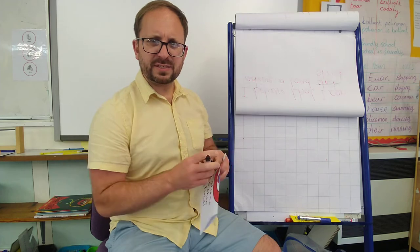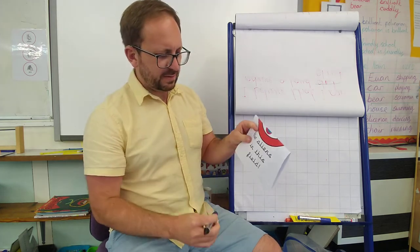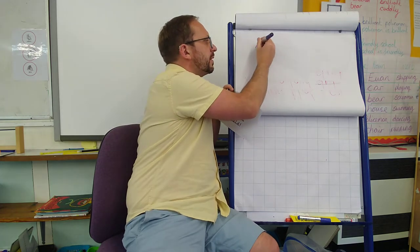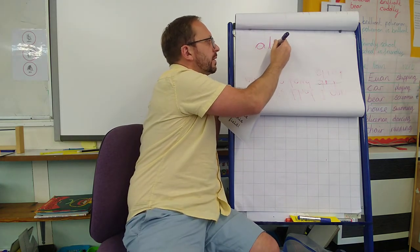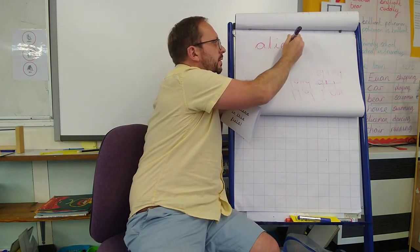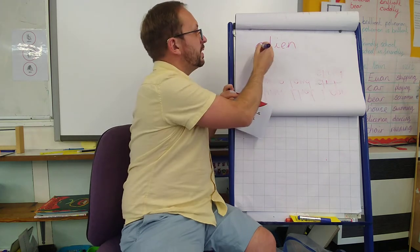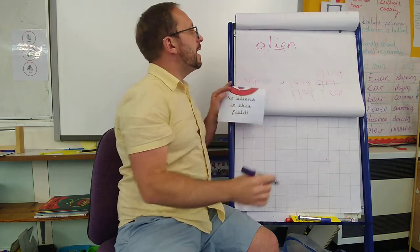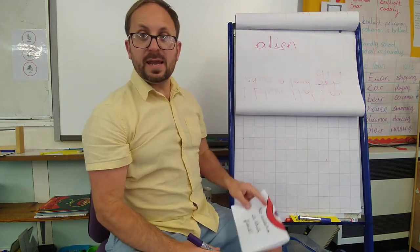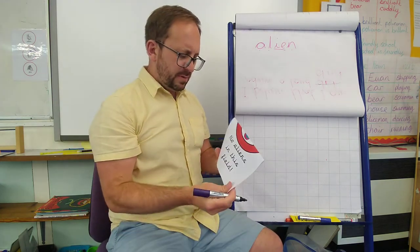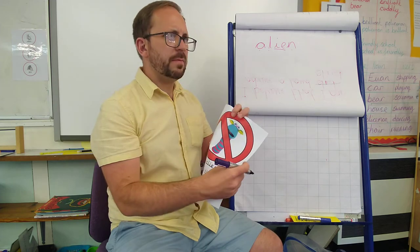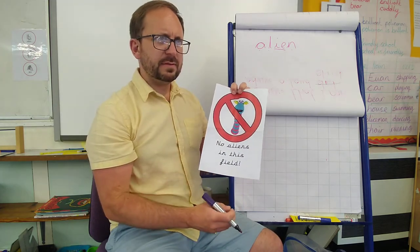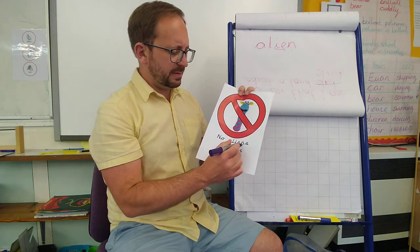A-liens. A-liens? But he was like, what's an A-line? Because he knows A-L-I-E-N spells A-line. But the picture is an alien. A-li-en.